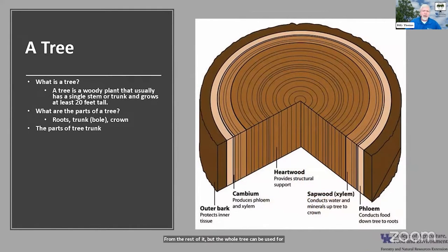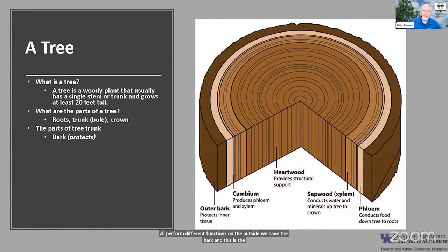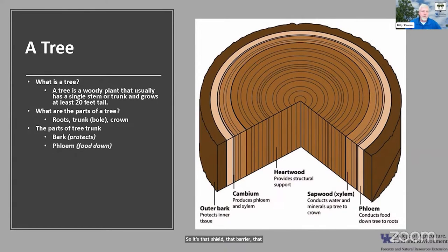Let's take a deeper dive into the tree. This is a diagram of a cross section of that woody stem — the trunk. There are various parts that all perform different functions. On the outside, we have the bark, which is the protective layer — it keeps stuff that is not tree from being inside the tree. It's that shield, that barrier, that defensive mechanism, which is really an important role.